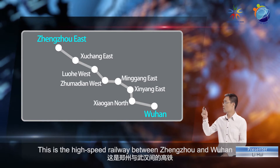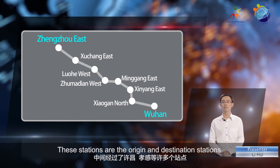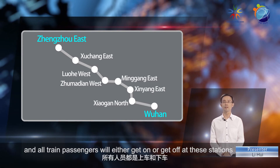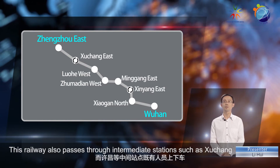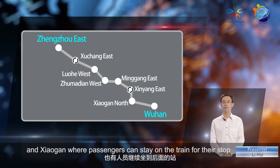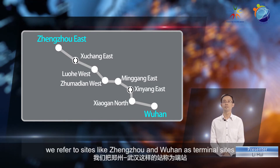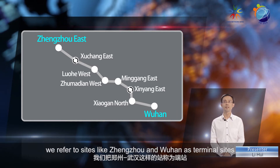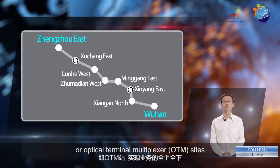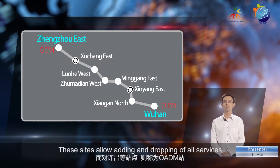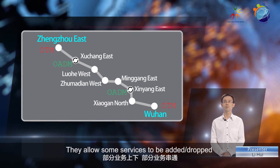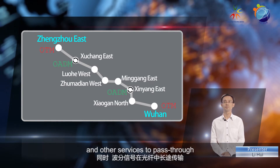This is the high-speed railway between Zhengzhou and Wuhan. These stations are the origin and destination stations and all train passengers will either get on or get off at these stations. This railway also passes through intermediate stations such as Xuchang and Xiaogan where passengers can stay on the train for their stop. In the WDM system we refer to sites like Zhengzhou and Wuhan as terminal sites or optical terminal multiplexer sites. These sites allow adding and dropping of all services. Intermediate stations like Xuchang are called OADM sites — they allow some services to be added or dropped and other services to pass through.